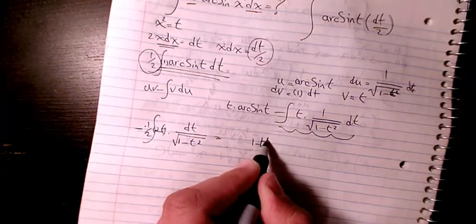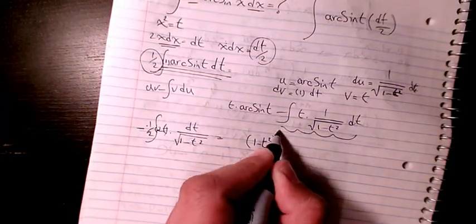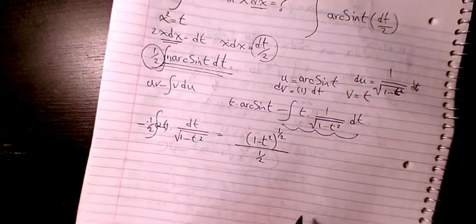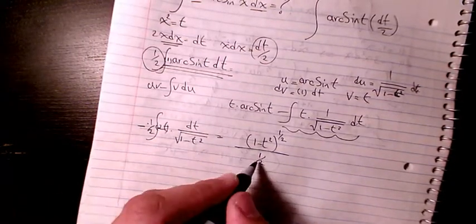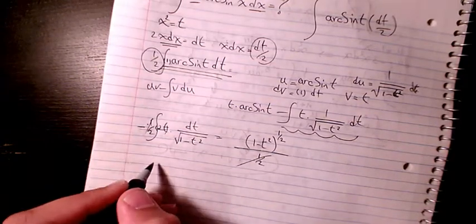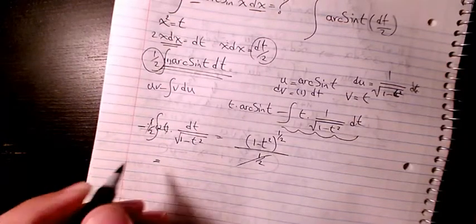1 minus t² to the power of negative 1 over 2, so it's going to be 1 over 2 divided by 1 over 2. So then this 1 over 2 and this 1 over 2 cancel out.